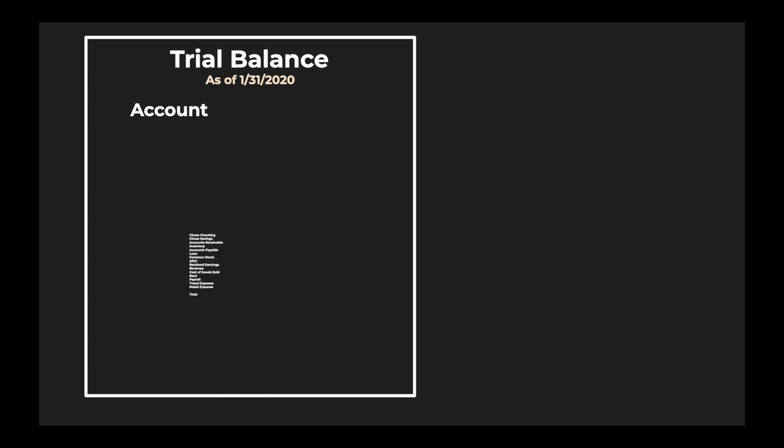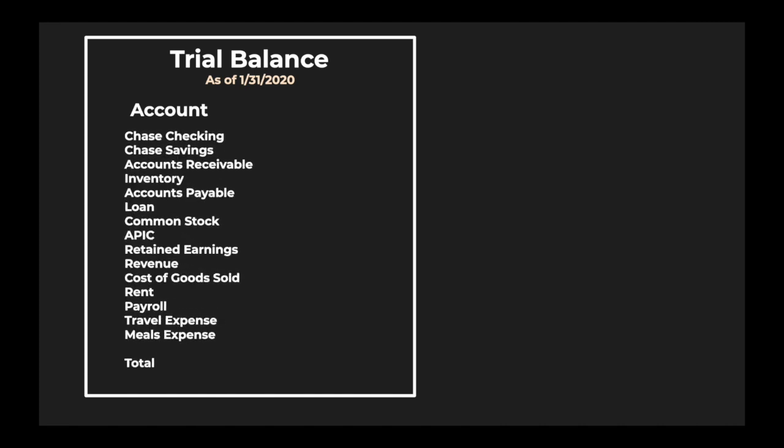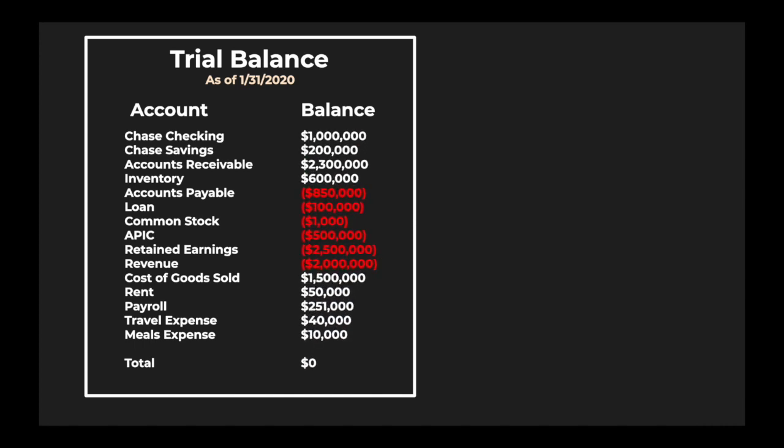Let's look at an example trial balance as of January 31, 2020. The trial balance will consist of all of the active accounts in our general ledger — pretty much we're looking at the cash accounts, accounts receivable, inventory, payables, all of the equity accounts, and then revenue and cost accounts. We're looking at the balance for each of these GL codes.